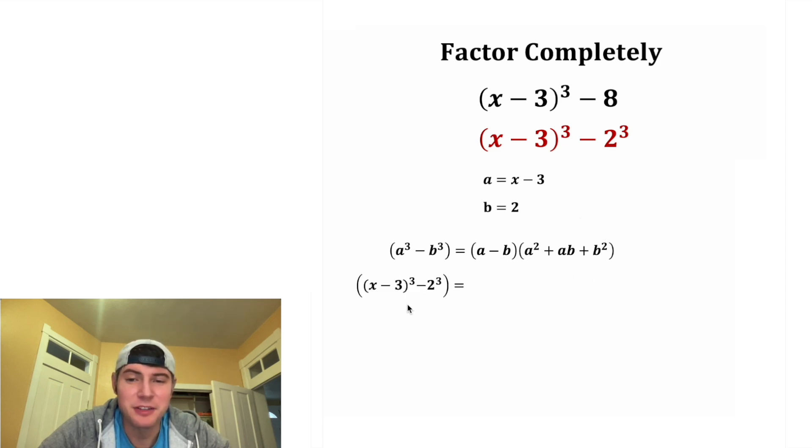We're going to be finding x minus 3 cubed minus 2 cubed. Let's copy down the parentheses. For the first parentheses, a is x minus 3, and then we're going to subtract b, which is 2.